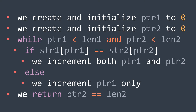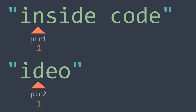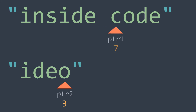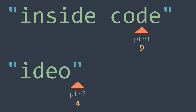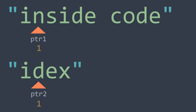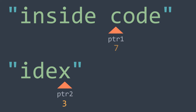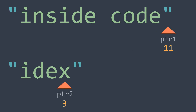To understand better how these two pointers move, let's see two examples. In the first example, after walking through the strings, ptr2 ends up equal to the length of str2, which is 4, so str2 is a subsequence. In the second example, after the loop, ptr2 is not equal to the length of str2, so it's not a subsequence.